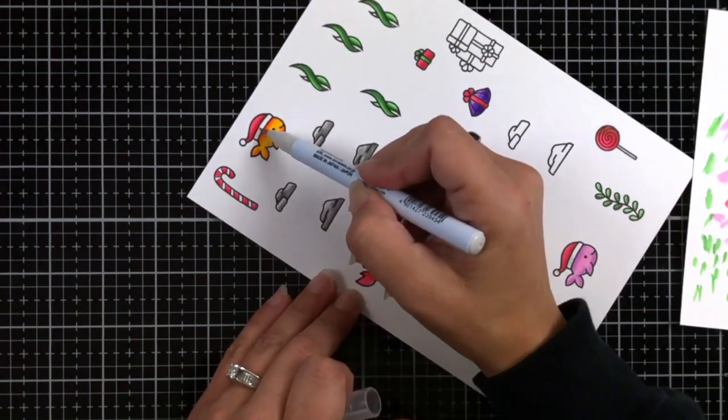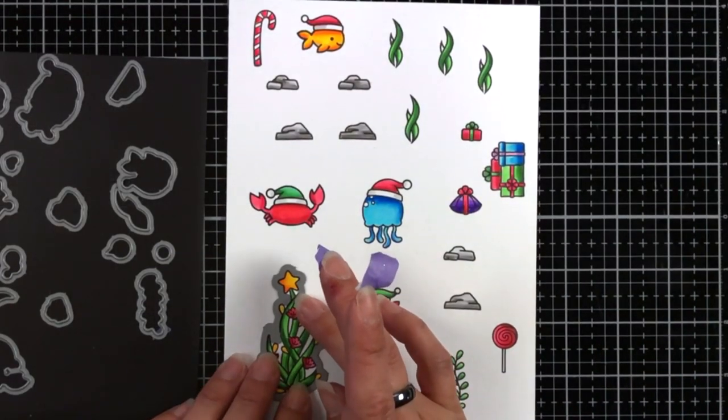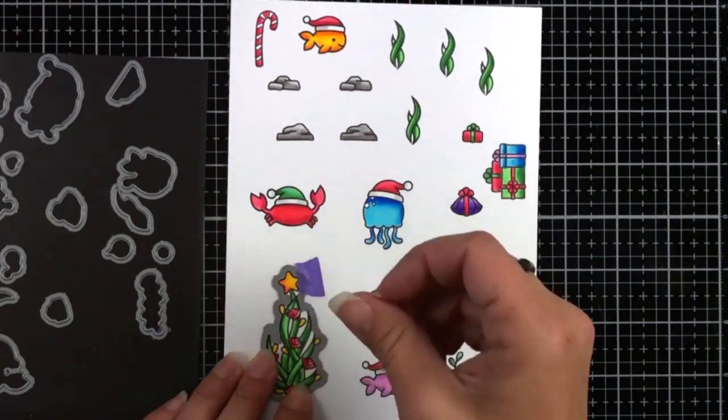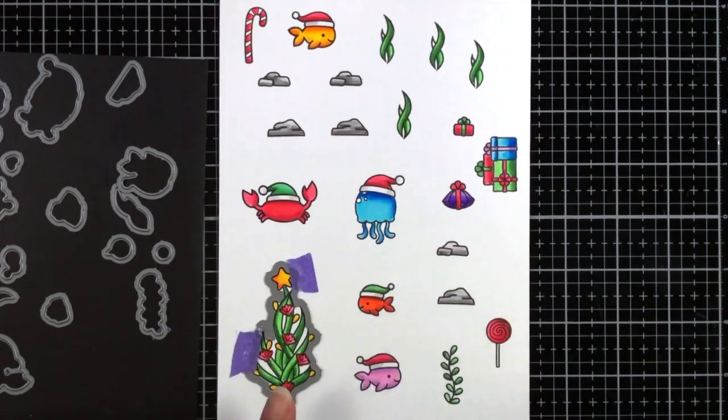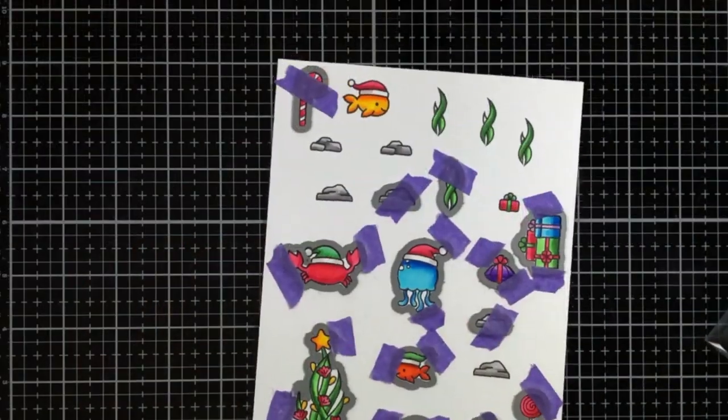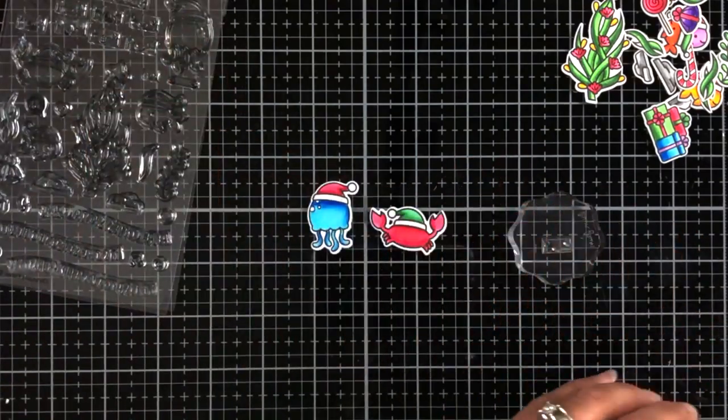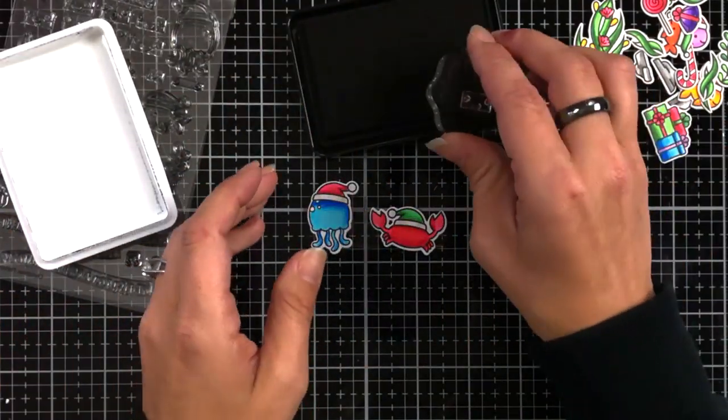One thing to be mindful about is don't drag your hand over your image right after you color it. It will take a little bit to dry because these are water-based markers. They're not soaking into this Bristol Smooth cardstock. So just give it a few minutes to dry before you run that through your die cutting machine or before you start moving your images around.